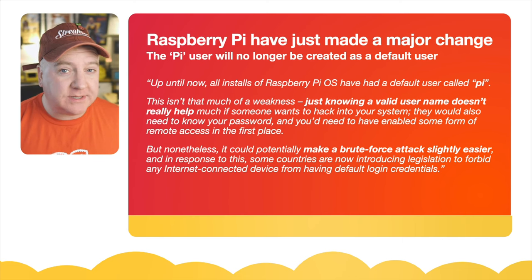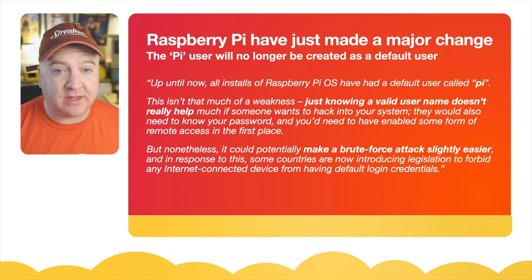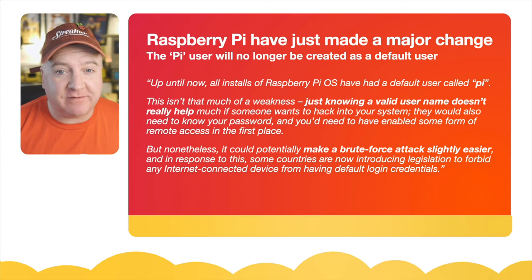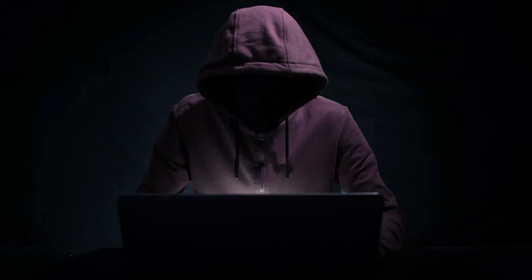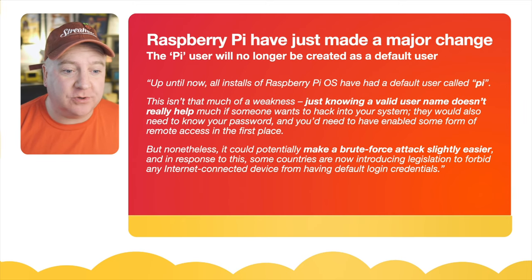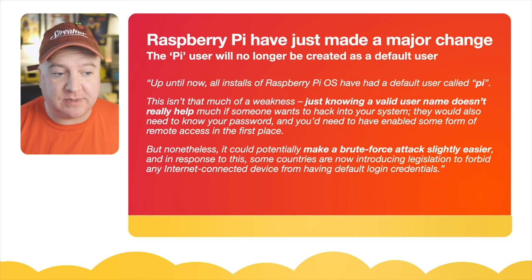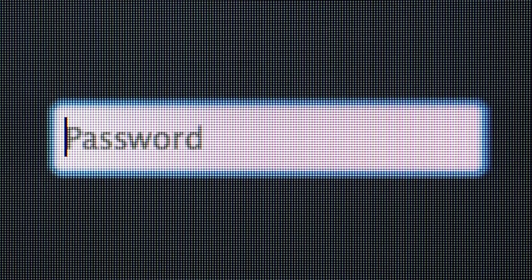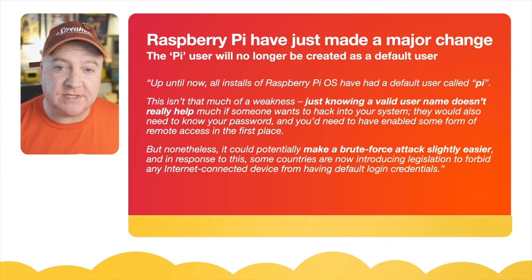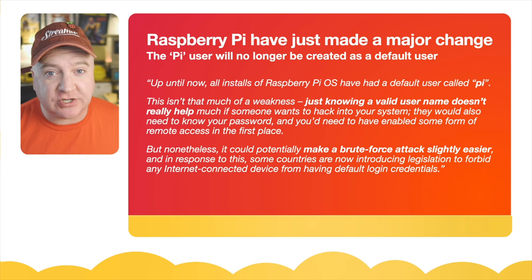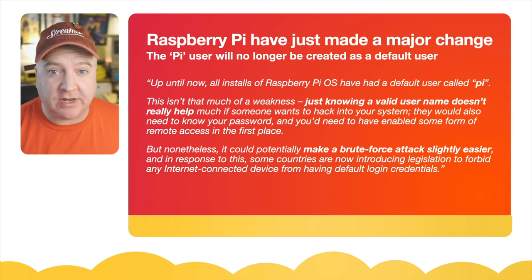Up till now, all installations of Raspberry Pi OS have had a default user called 'pi'. This wasn't so much of a weakness — just knowing a valid username doesn't really help if somebody wants to hack into your system; they would also need to know your password and would need to enable some form of remote access. Nonetheless, it could potentially make a brute force attack slightly easier, and in response to this, some countries are now introducing legislation to forbid any internet-enabled device from having default login credentials.